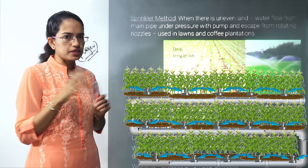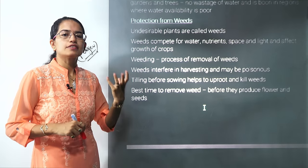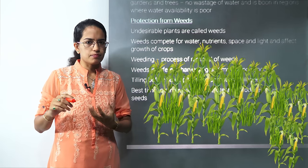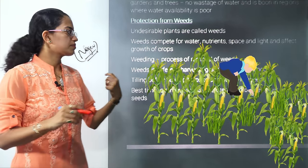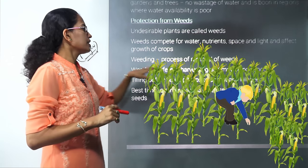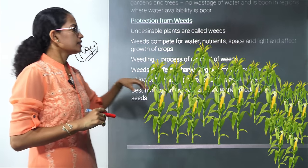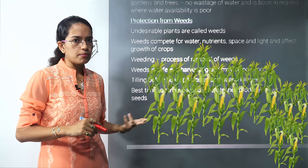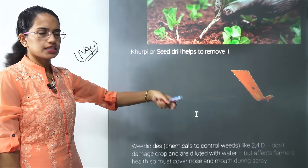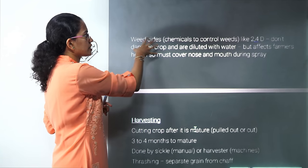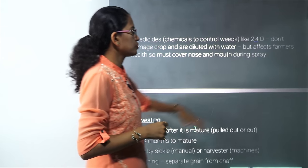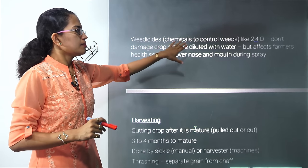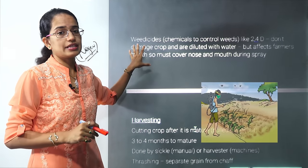Weeds are unwanted plants that grow among the crop. They can be removed by hand — known as weeding — or with a khurpi. The best time to remove weeds is before flowers and seeds come up. Weedicides or chemicals such as 2,4-D can also be used; they do not affect the normal crop but are diluted with water. Farmers must cover their nose and face properly before spraying weedicides as it is harmful to them.